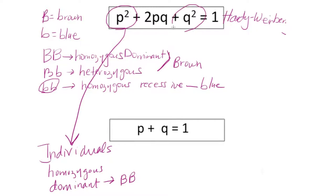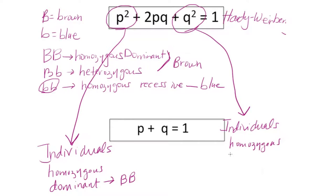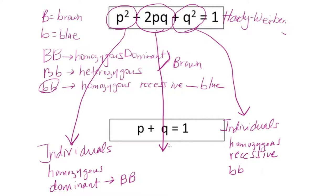We also have a q² variable, which represents individuals who are homozygous recessive — in our eye color example, those with genotype little b, little b. The last variable in the equation is 2pq, which represents the individuals who are heterozygous, meaning those with genotype big B, little b.